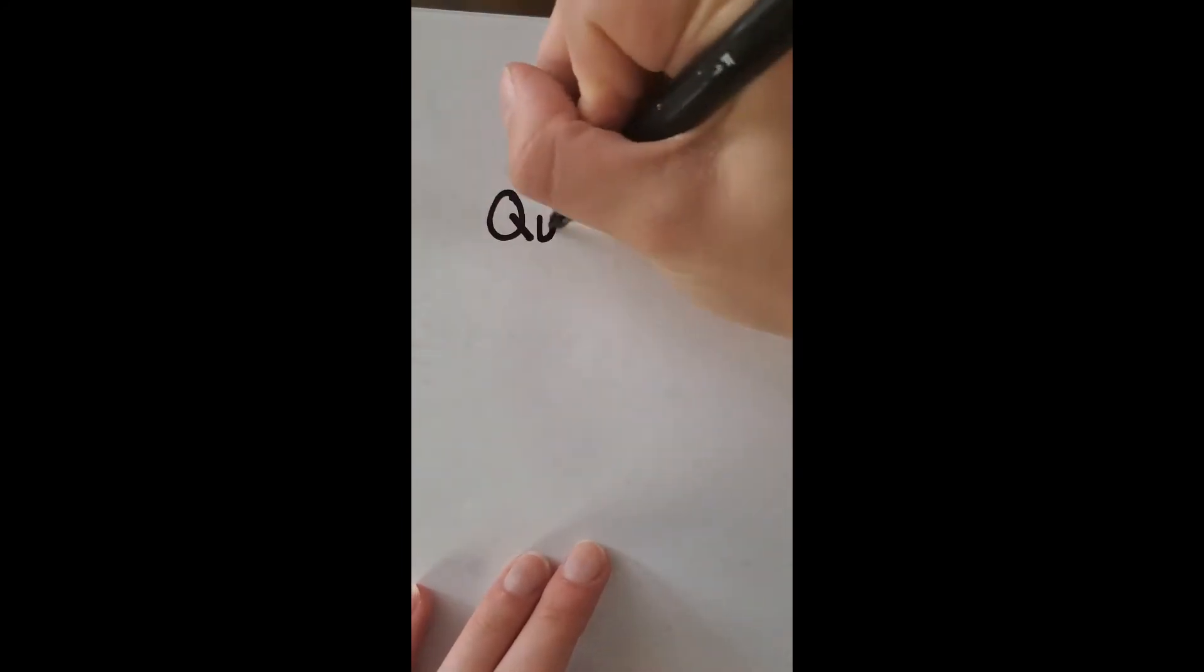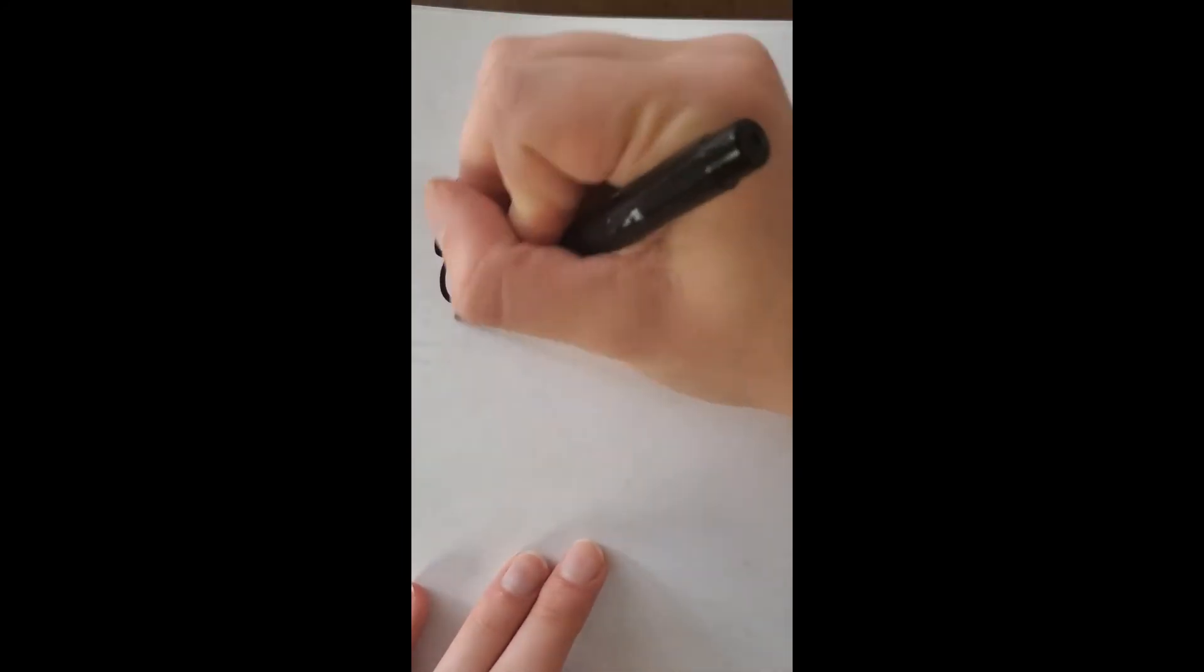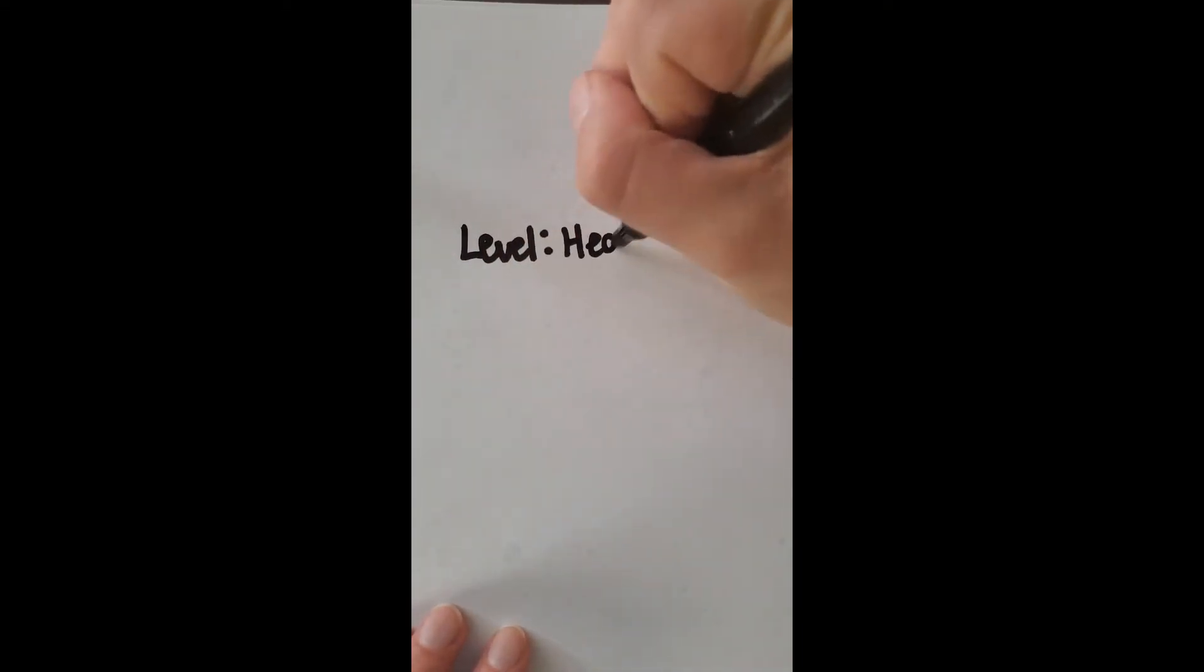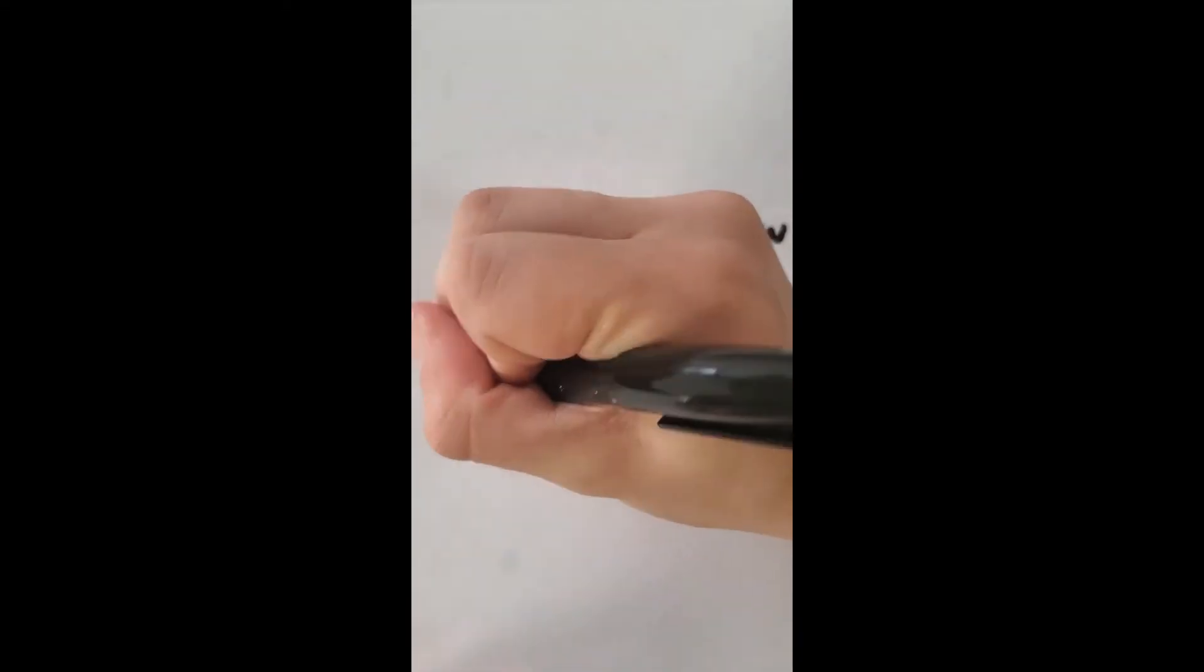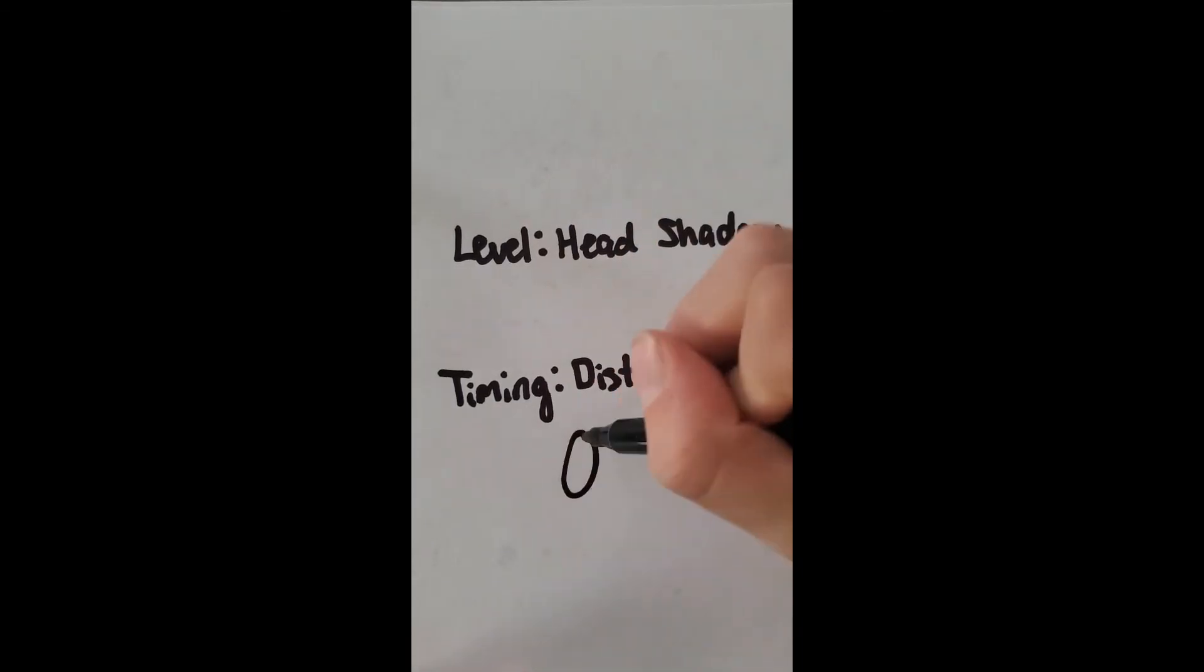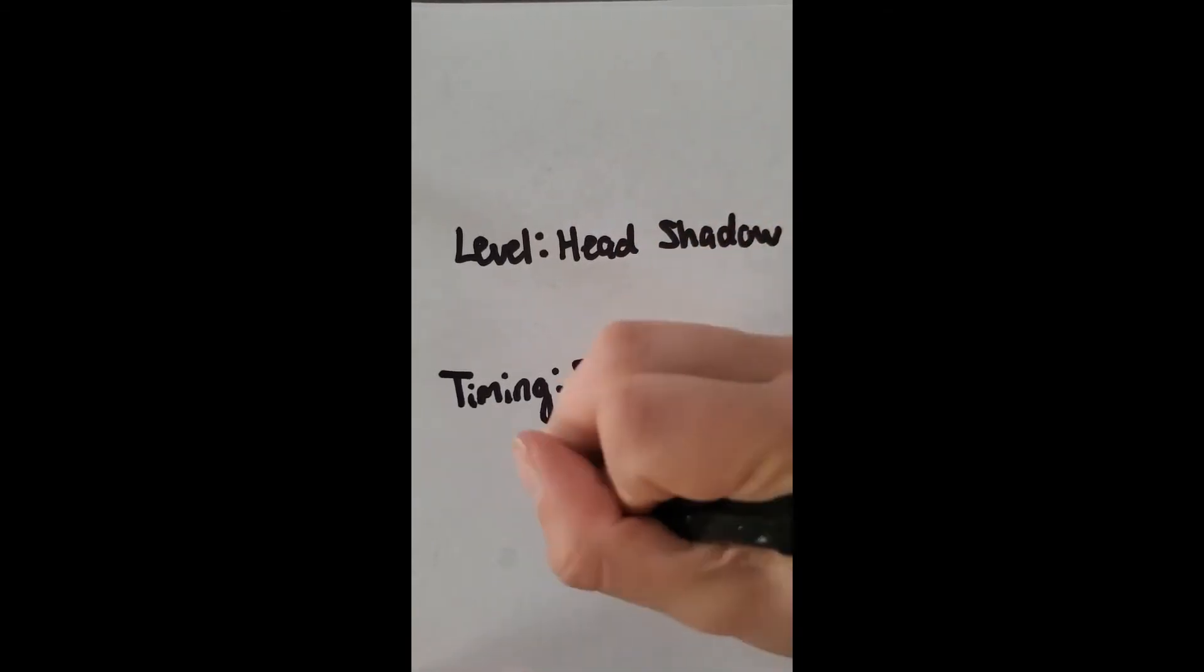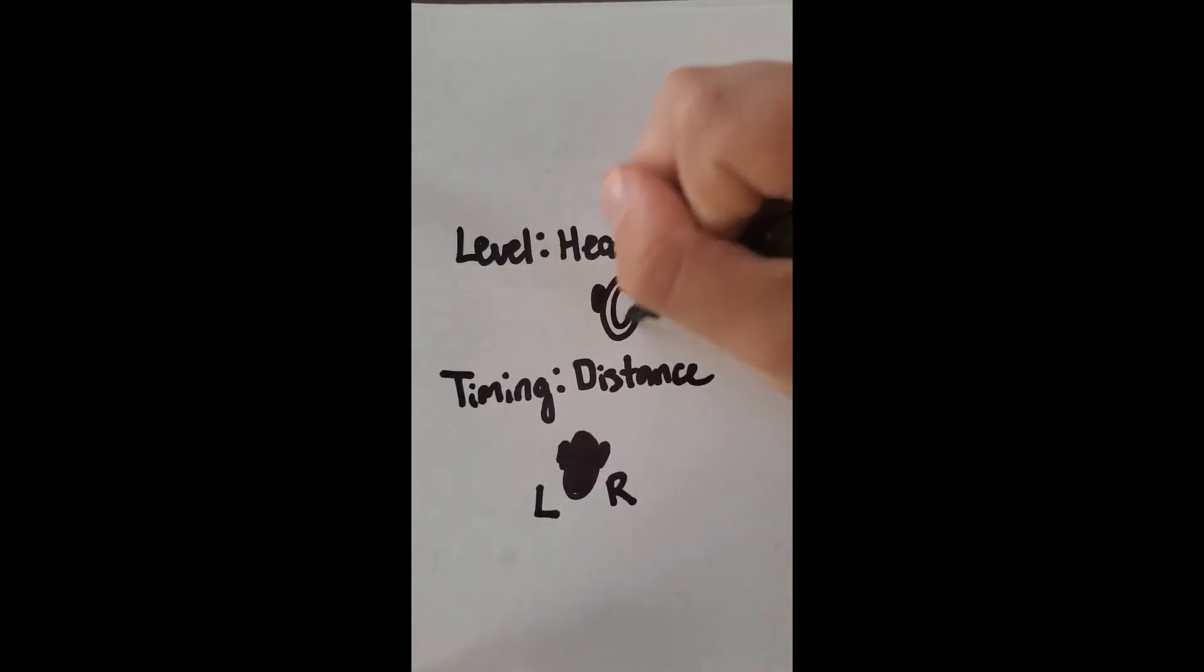And so, for a quick review, two ways that we localize are interaural level difference, which is largely because of the head shadow, and interaural timing difference, which is mostly due to the distance between our ears.